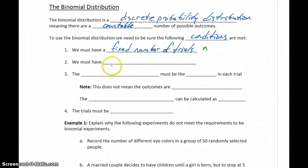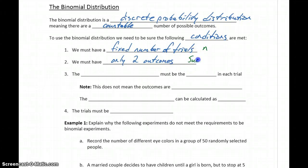Each trial needs to have only two outcomes, and we refer to those as success or failure. So there are two outcomes: one that we're interested in and one that we're not interested in occurring.